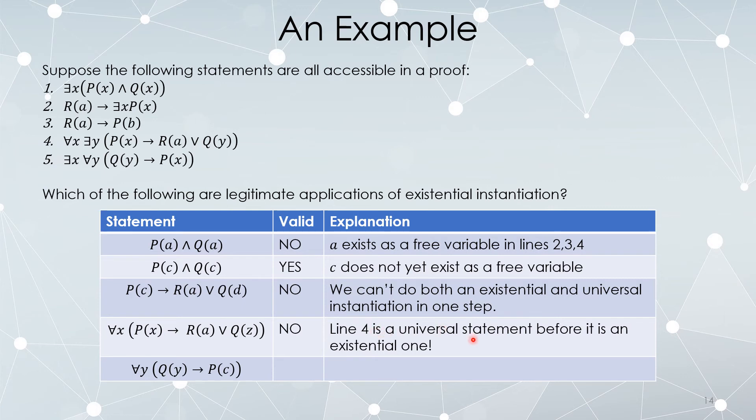Line four is a universally quantified statement. For any x, some stuff happens which means it's universally quantified before anything else.